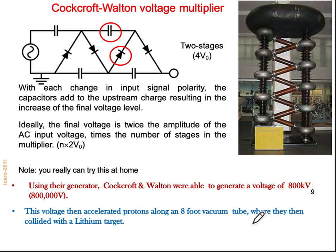For a two-stage Cockcroft-Walton circuit giving four times the input voltage, you need four capacitors and four rectifiers. Each time the polarity of the AC signal changes, the capacitor adds the upstream charge, resulting in an increase in the final voltage level. The final voltage is twice the amplitude of the AC input per stage — that is N × 2V₀.